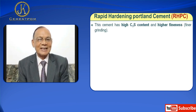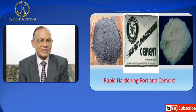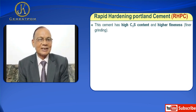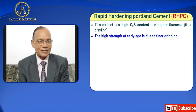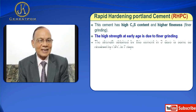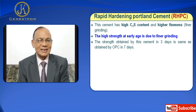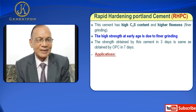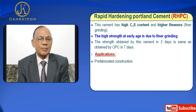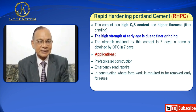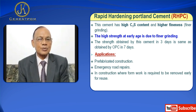Next is Rapid Hardening Portland Cement, RHPC. This cement has high C3S content and finer grinding is done for this type of cement. The high strength at early age is due to finer grinding. The strength obtained by this cement in 3 days is the same as obtained by OPC in 7 days. Applications: used for prefabricated construction, emergency road repairs, construction where formwork is required to be removed early, and in cold weather concreting.